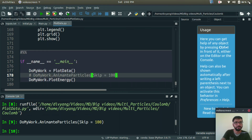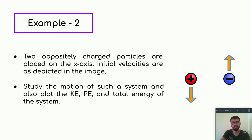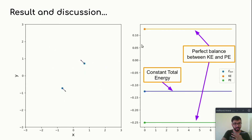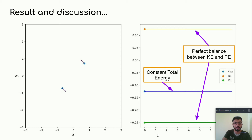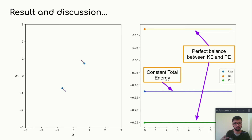From the animation, we can see the particles are moving in a circular path. Since all three energies — total energy, kinetic energy, and potential energy — are remaining constant, there is no interaction between kinetic and potential energy. Therefore, the total angular momentum is conserved. They will not stick to each other; if the initial kinetic energy is in the right combination with potential energy, they will move in a circular path.